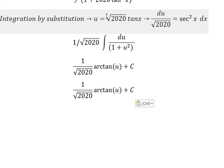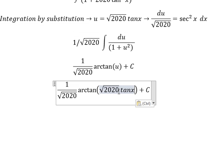For u, we need to change back for this one: 1 over square root of 2020 arctan of square root of 2020 tan x plus C. This is the final answer.